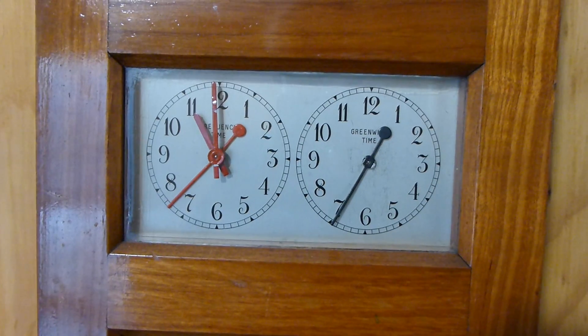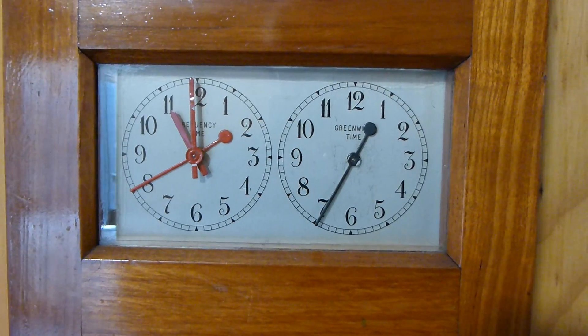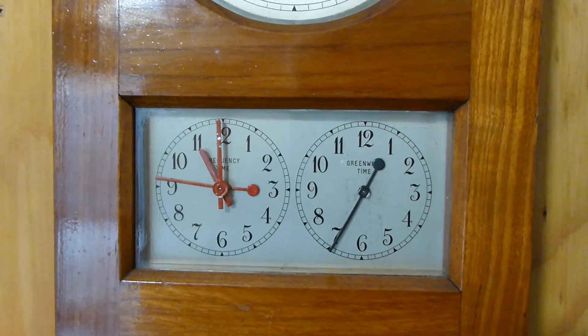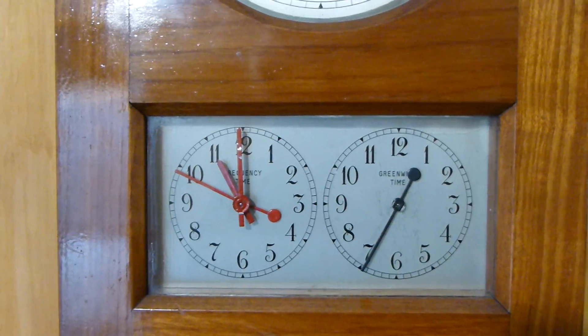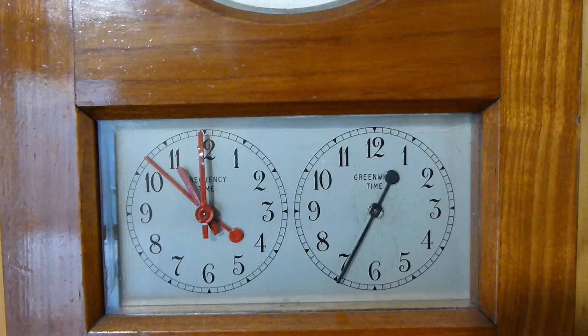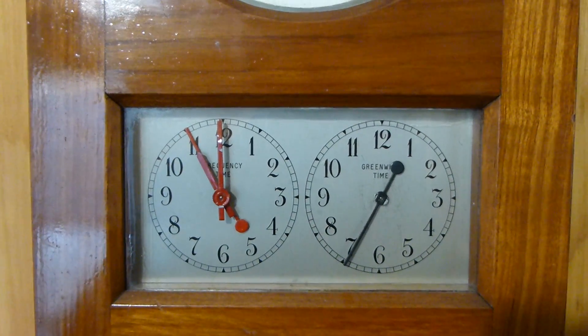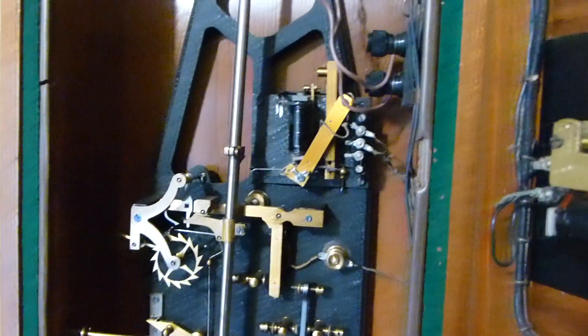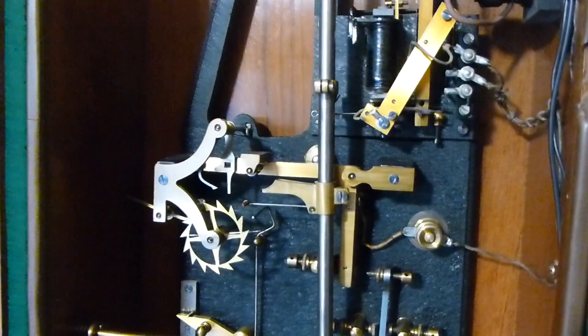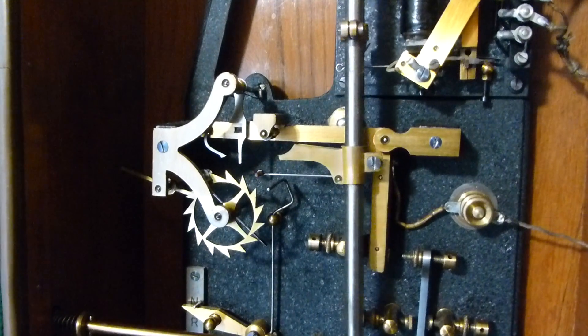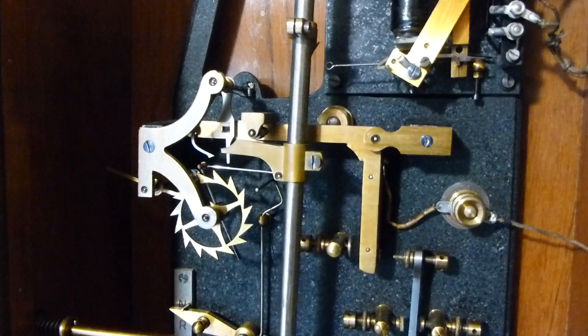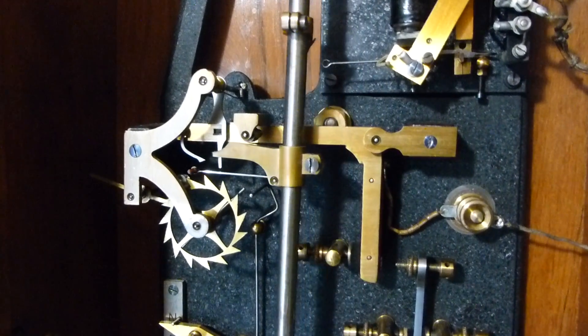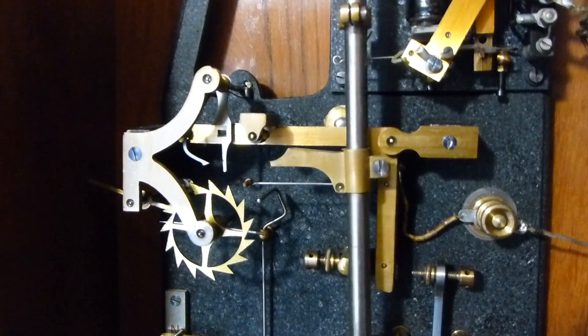And the small display on the right was the error between the master and the generator. So if there was an error in one direction then the operator would increase the amount of water to the generators and speed up the frequency and vice versa. It's a very nice clock in good condition. And a few extra bits and pieces for the generator control.